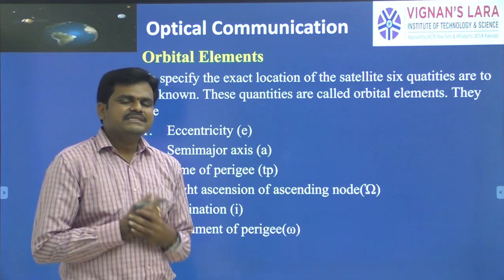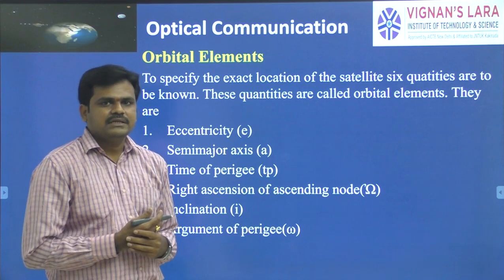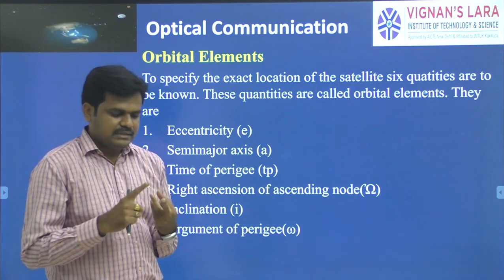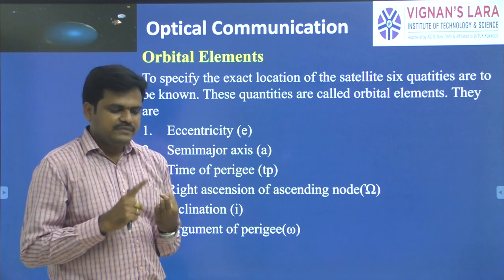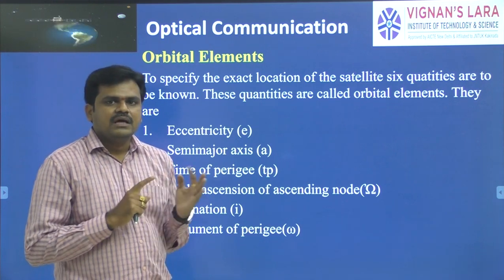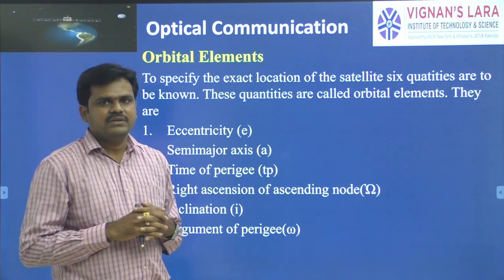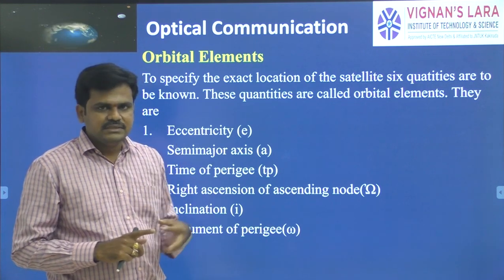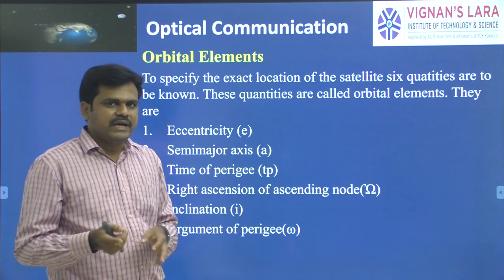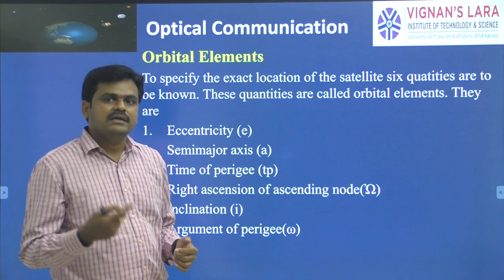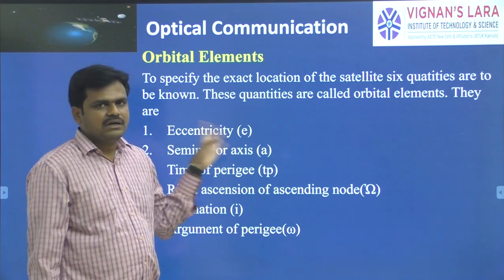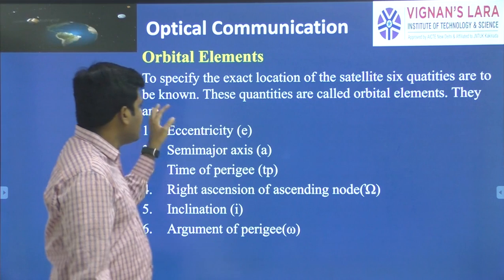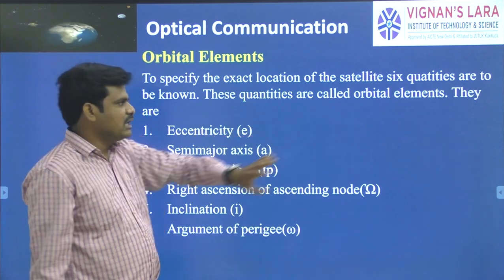In the previous session we discussed three elements: velocity of the satellite, orbital period, and the distance from the satellite to the centre of the earth. If these three are known, we can know the location of the satellite. Apart from these three, there are six more quantities with which the location of the satellite can be known, and these six quantities are called orbital elements. To specify the exact location of the satellite, these six quantities must be known.